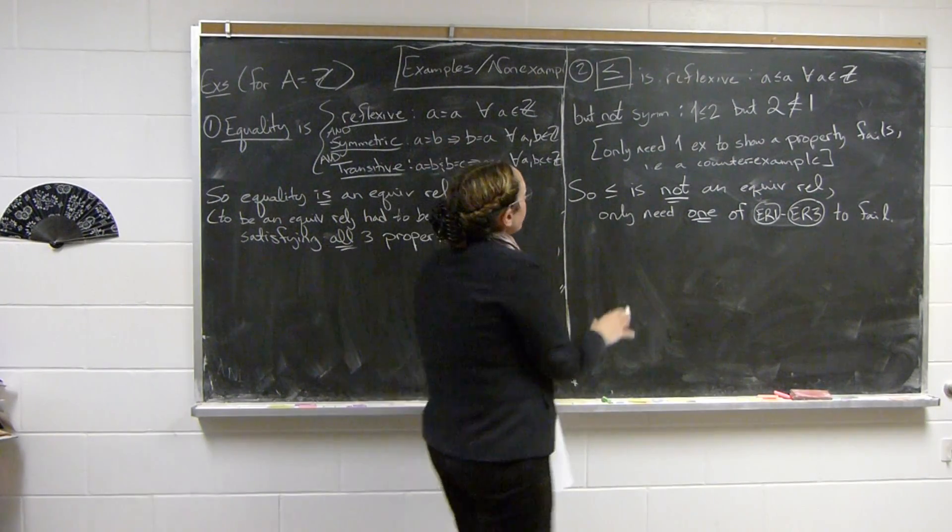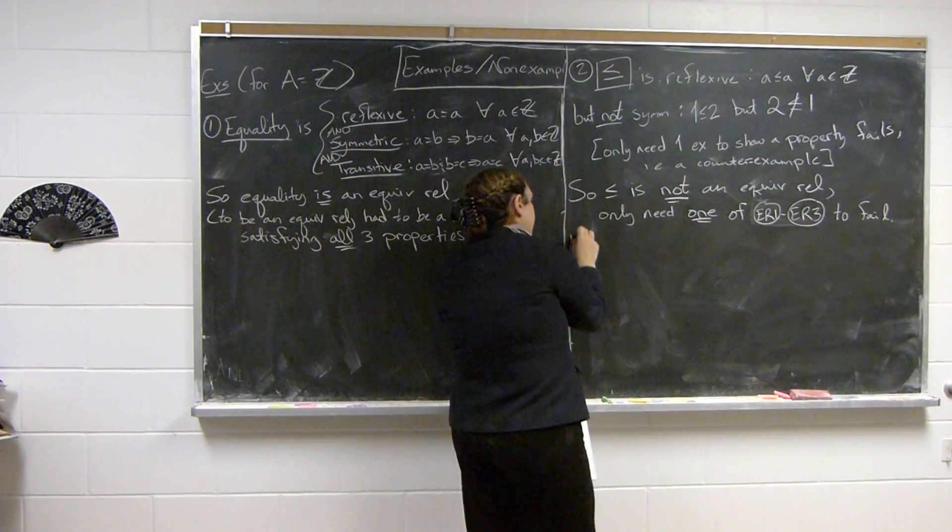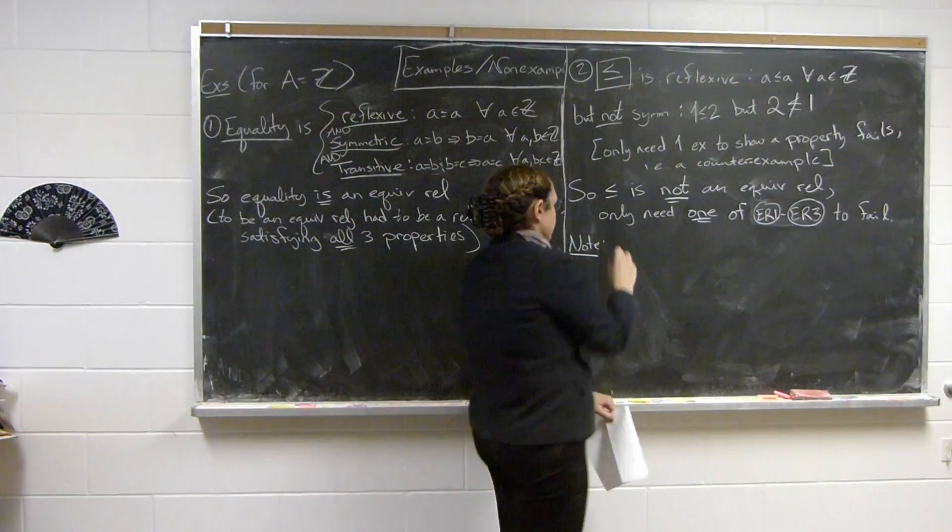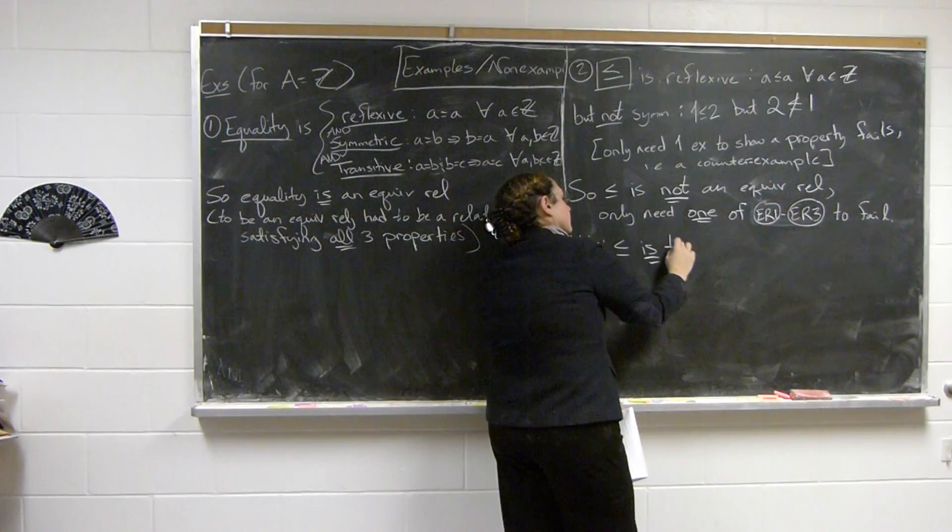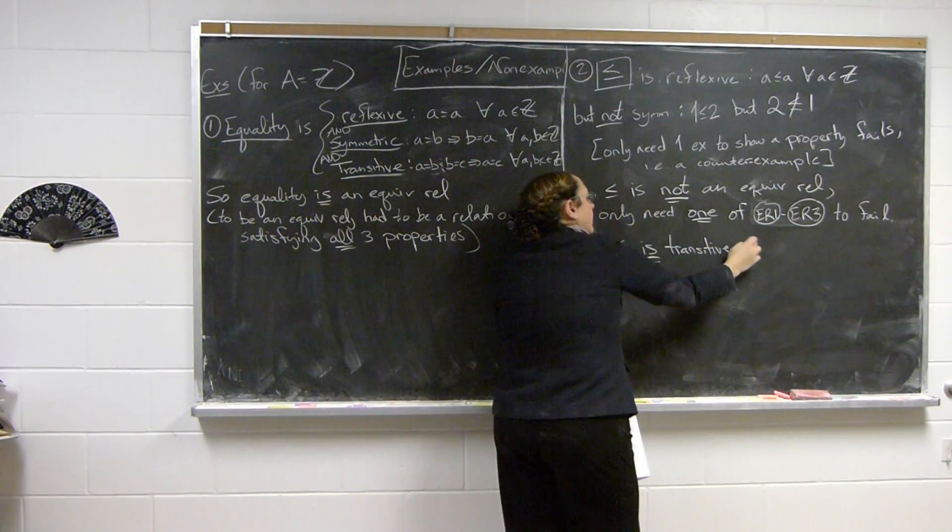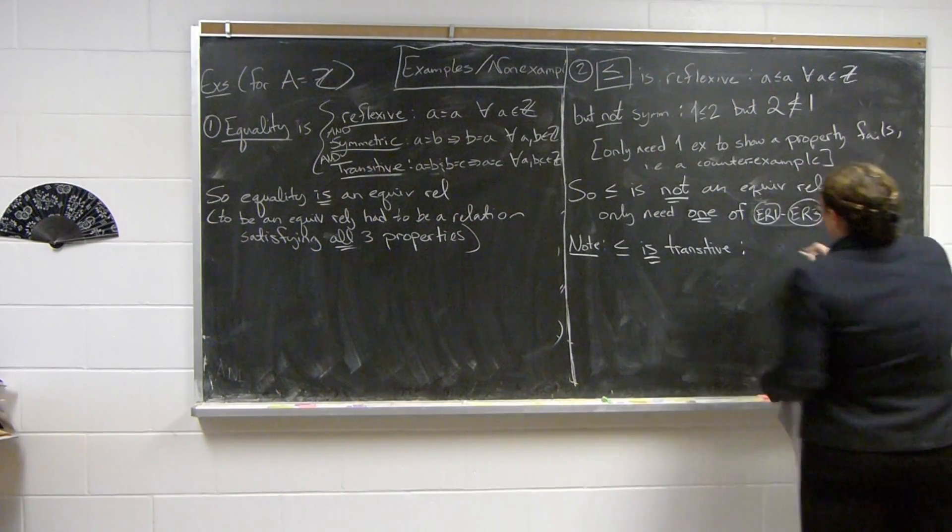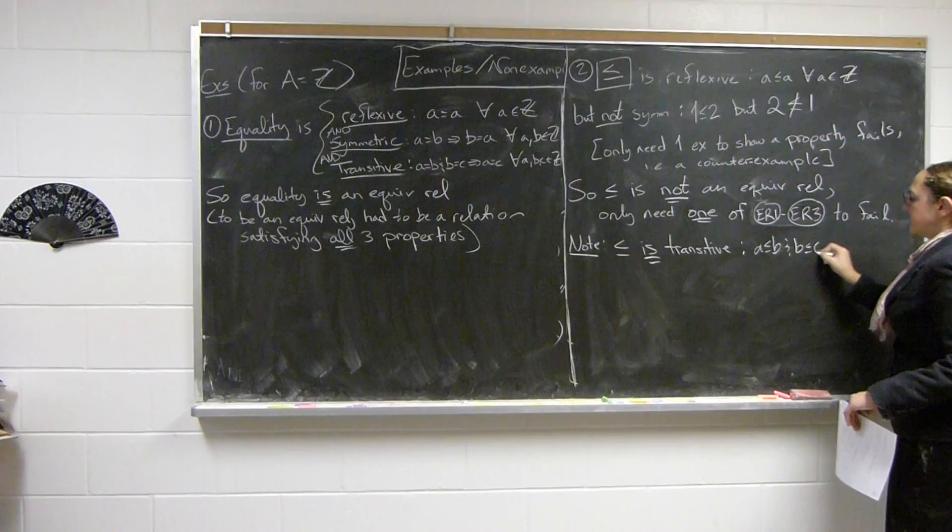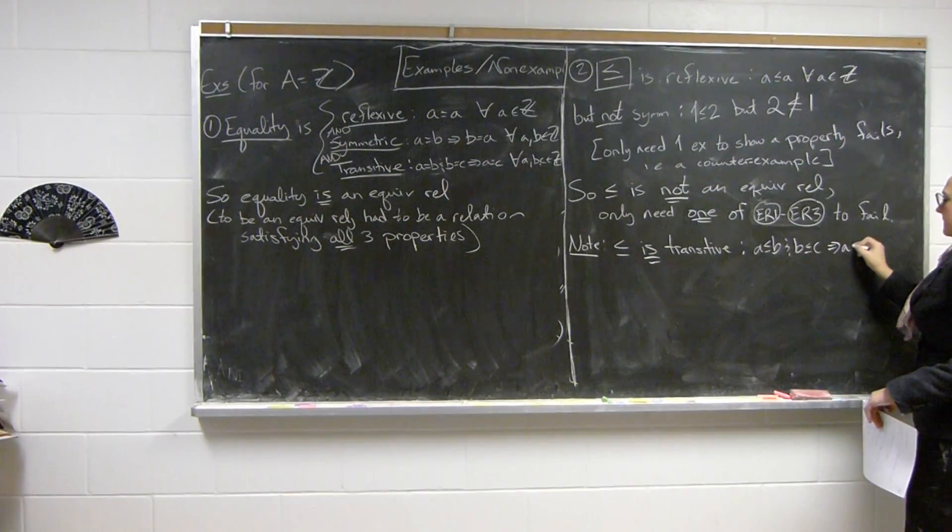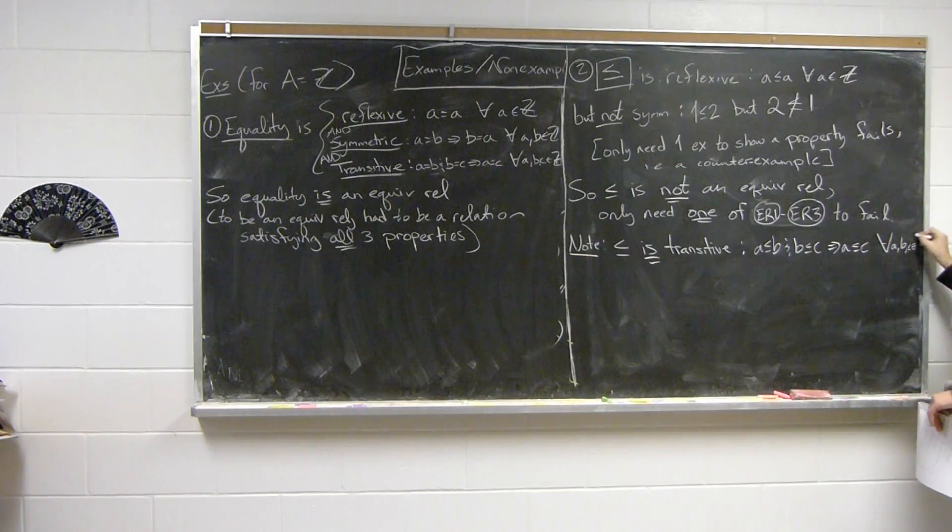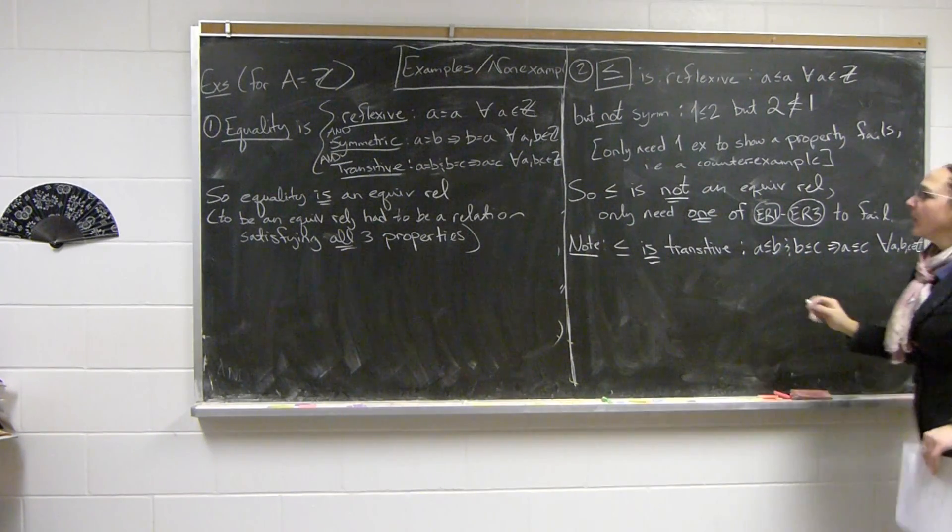And it's important that we only needed one, because note that actually transitivity holds. Because A is less than or equal to B, and B is less than or equal to C implies A is less than or equal to C for all integers A, B, C.